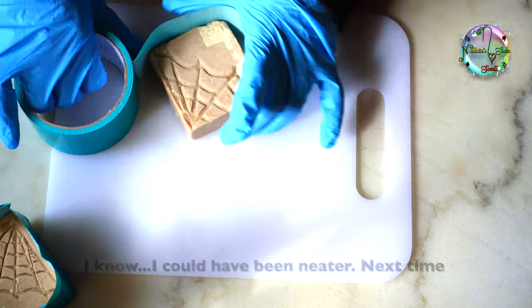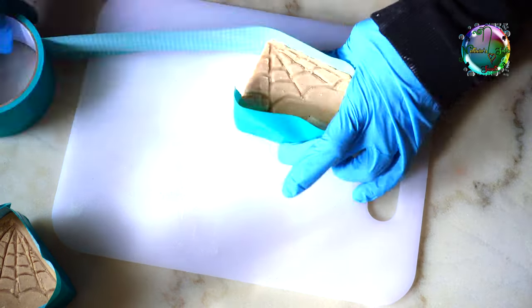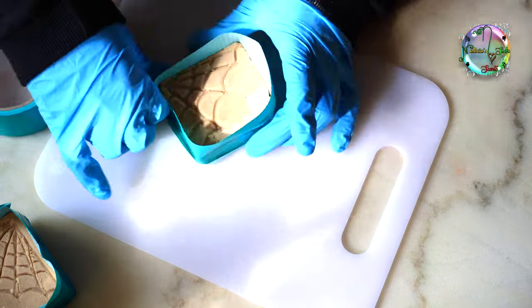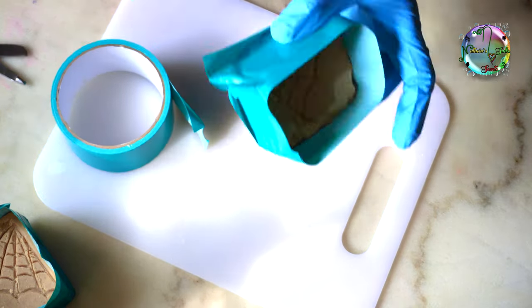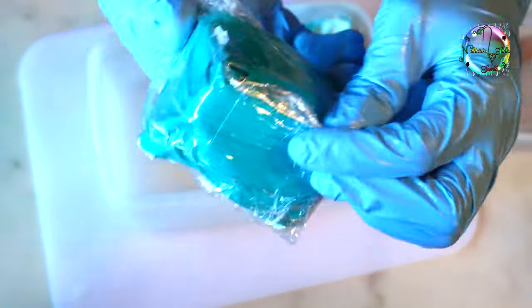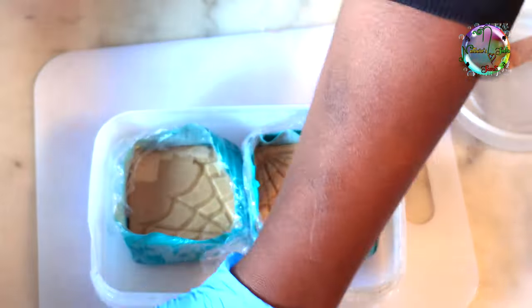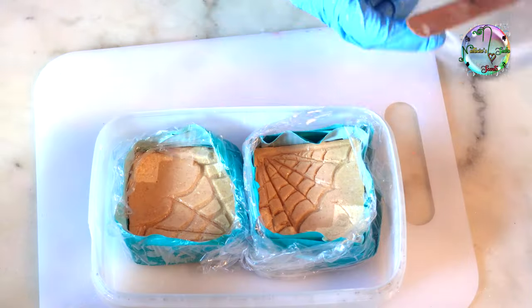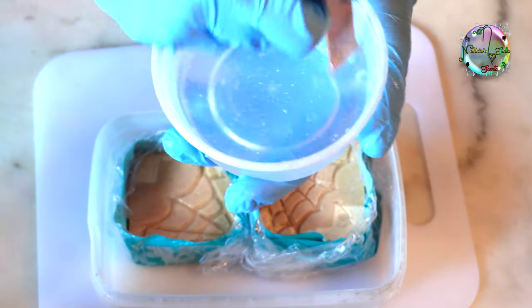And this is attempt number two. As you can see, the web spaces are a bit spacier, and I'm trying to wrap the soap because the first time I tried to do this, all the stuff leaked out. Here is the resin that I used. It worked pretty well. It dried clear.